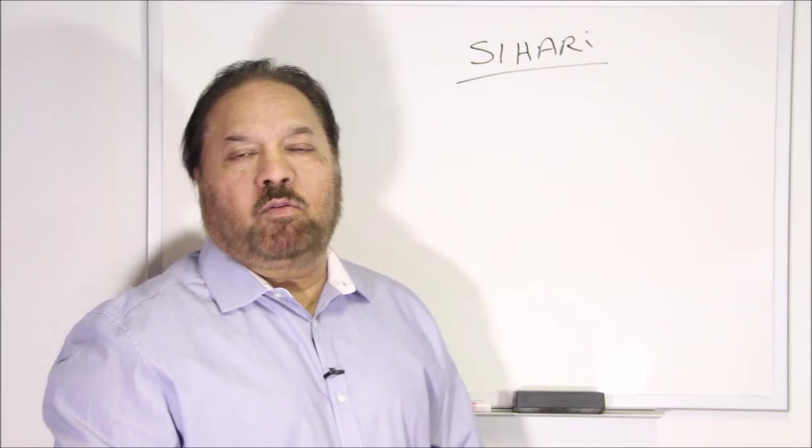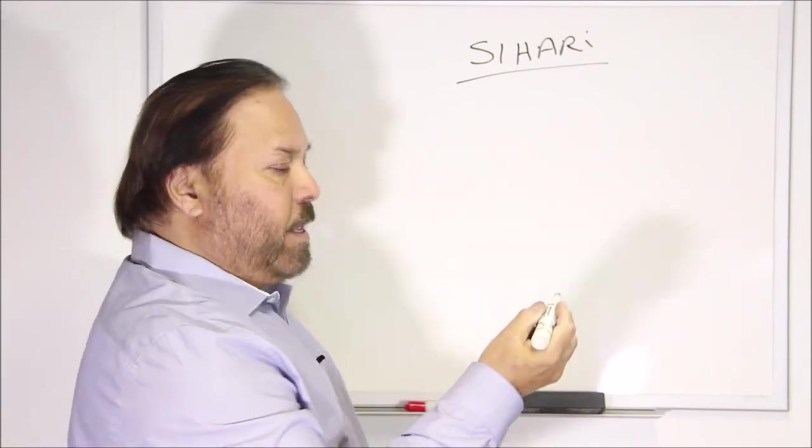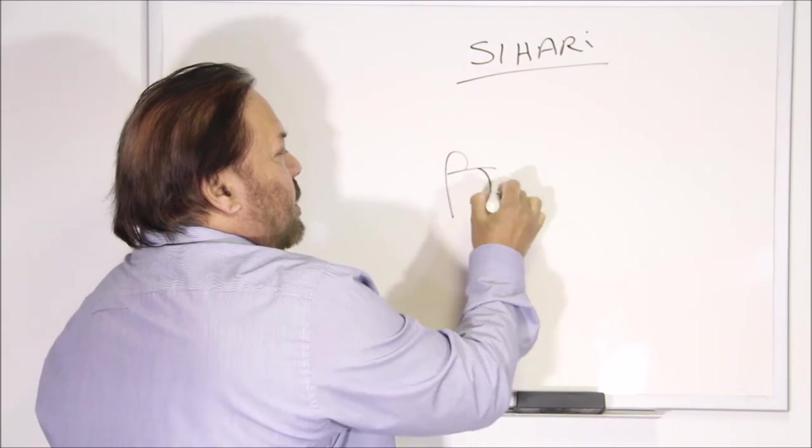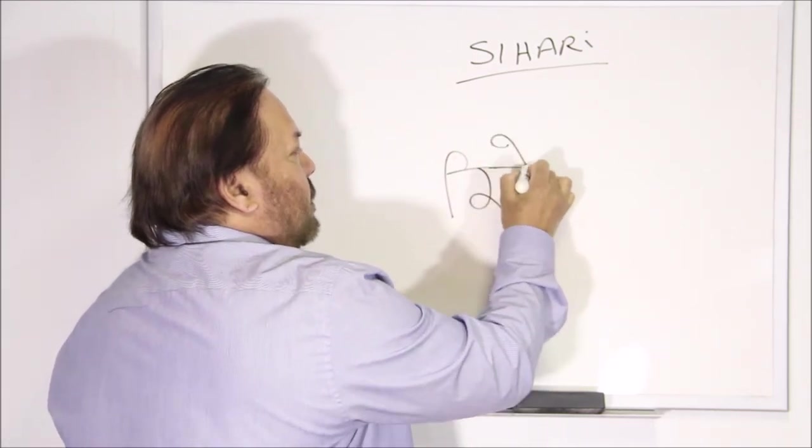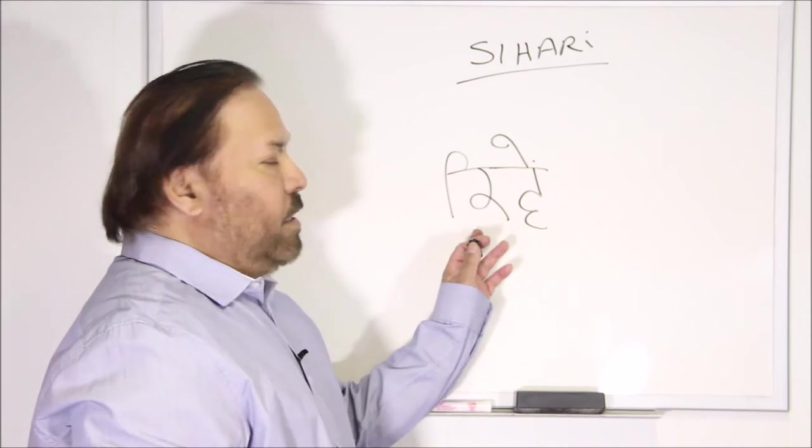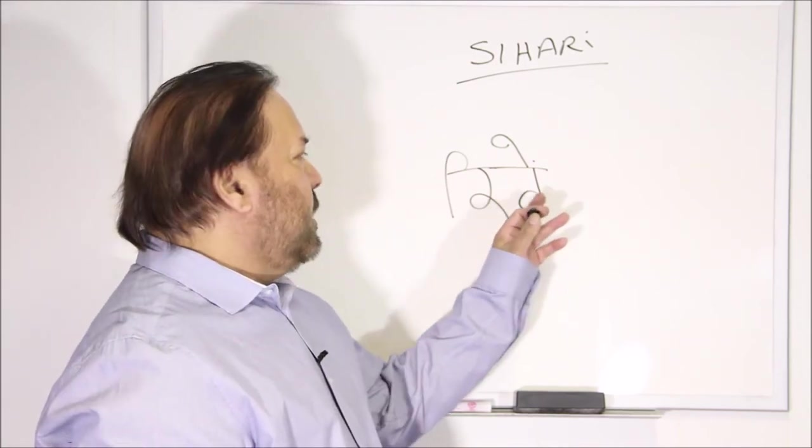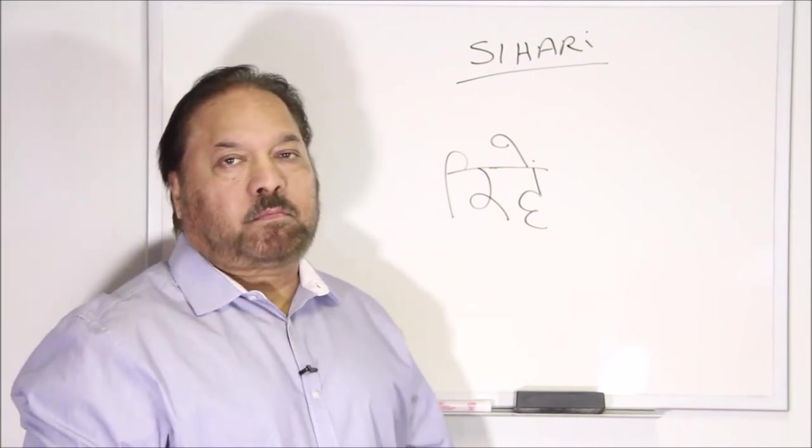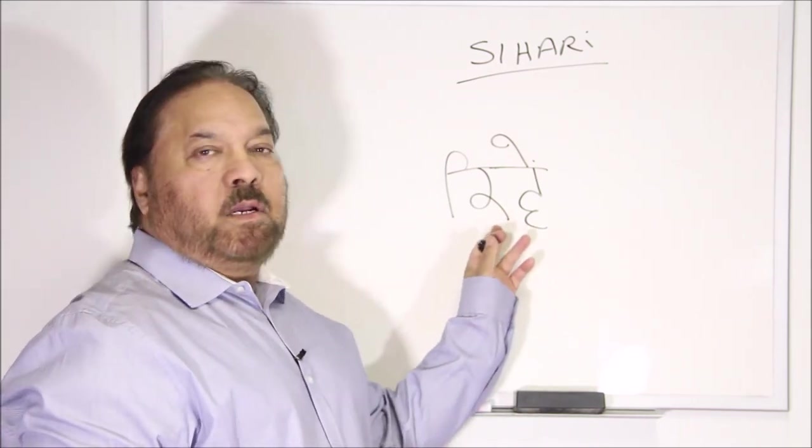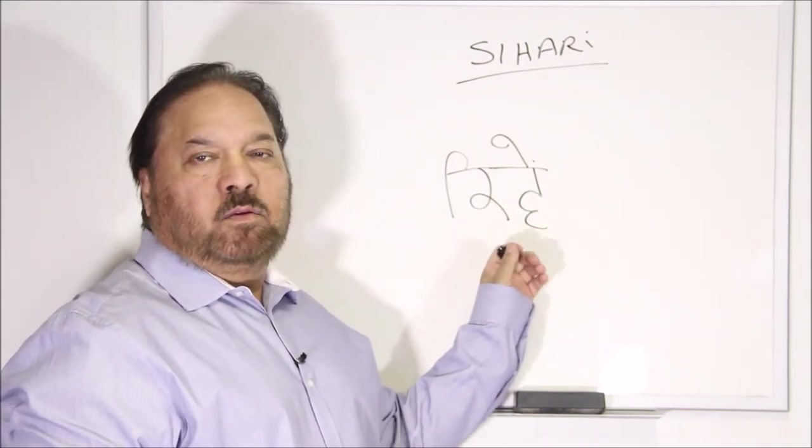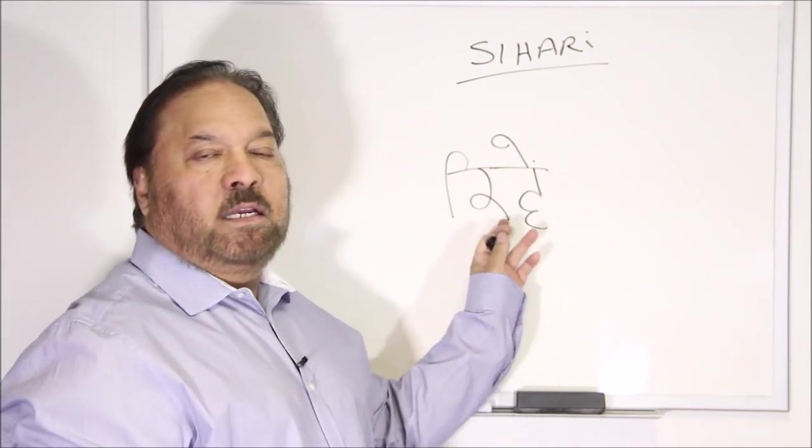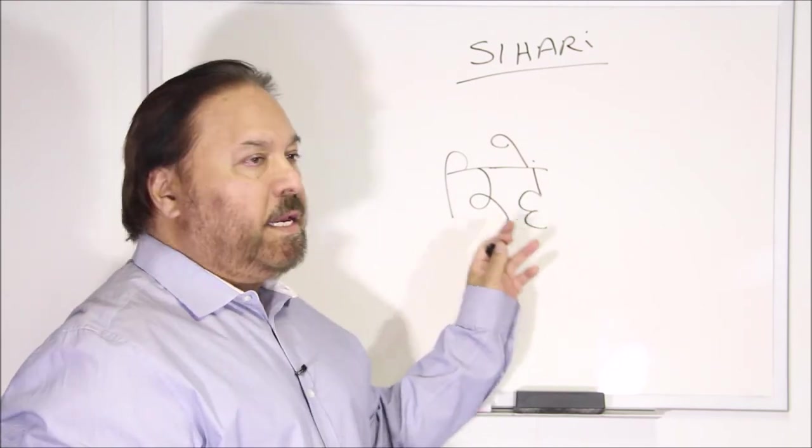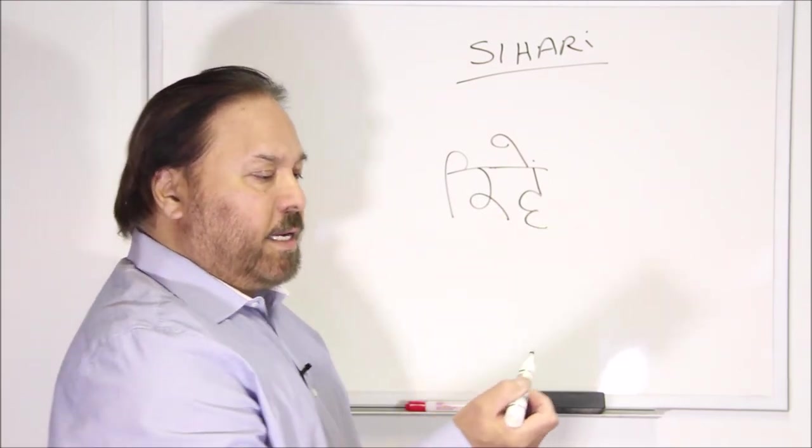If I want to write down Khami, I use Kaka here and I used Sihari here. So it is pronounced Keme. So you can see the difference, Keme. So Sihari here, Keme.